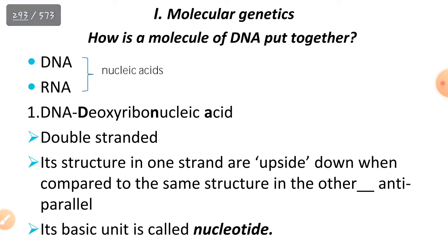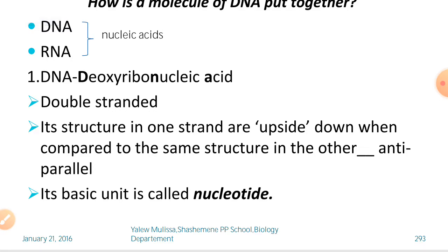How is a molecule of DNA put together? There are two types of nucleic acids. Nucleic acid is also called DNA. DNA is double-stranded — it has one strand upside down compared to the other, which is anti-parallel.